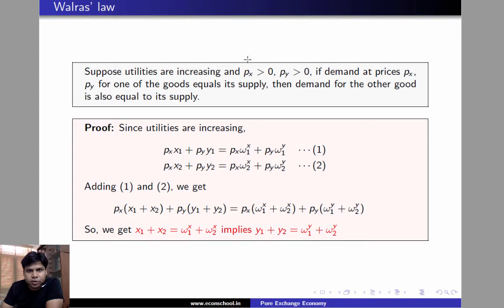First one is Walras' Law. Walras' Law states that when prices are positive and utilities of the consumers are increasing, then if demand equals supply in one market, let's say market for X, then demand will also equal supply in market for Y.